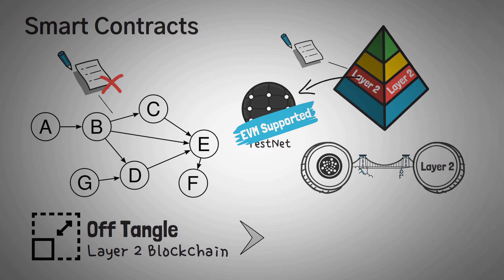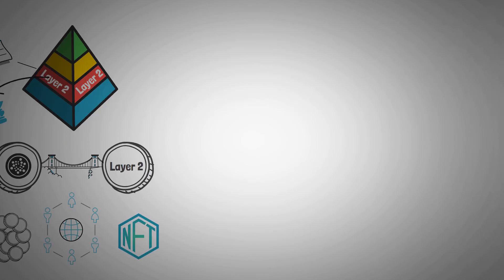Anyways, layer 2 of IOTA should include tokens, decentralized applications, and even NFTs, making it pretty comparable in utility to Ethereum. Now here's another good question that I had. If it's free, how do they prevent spam?